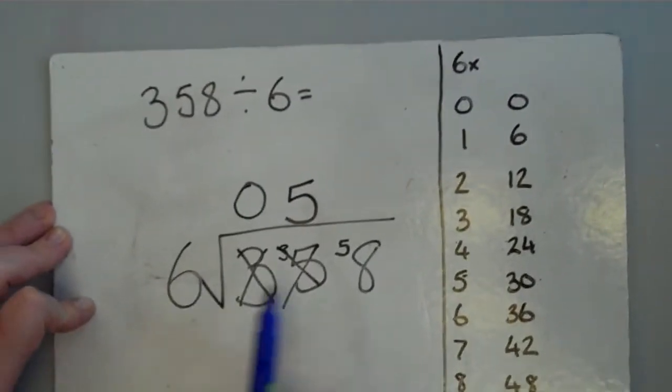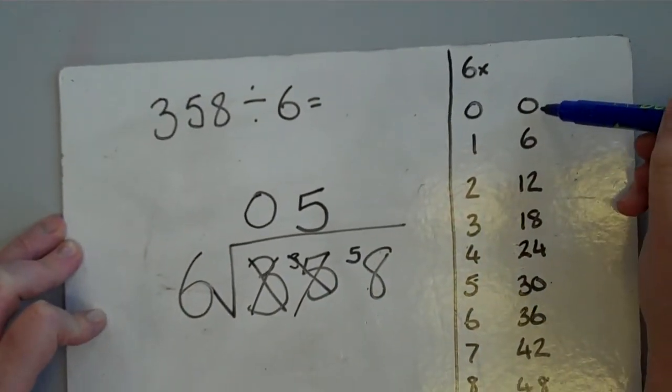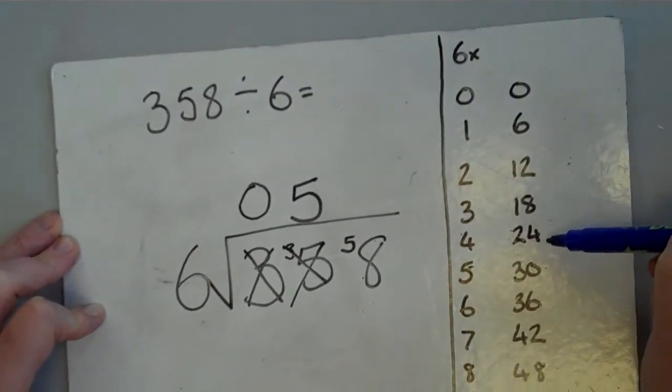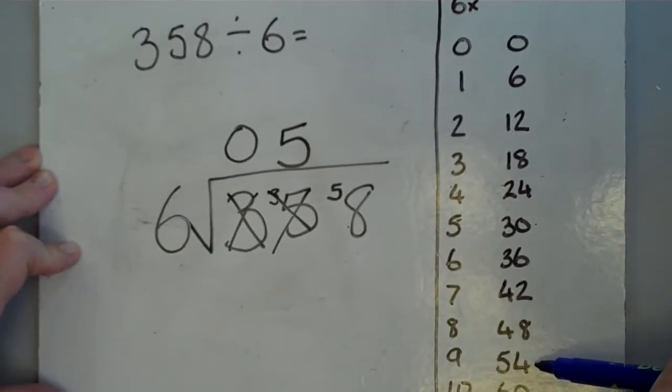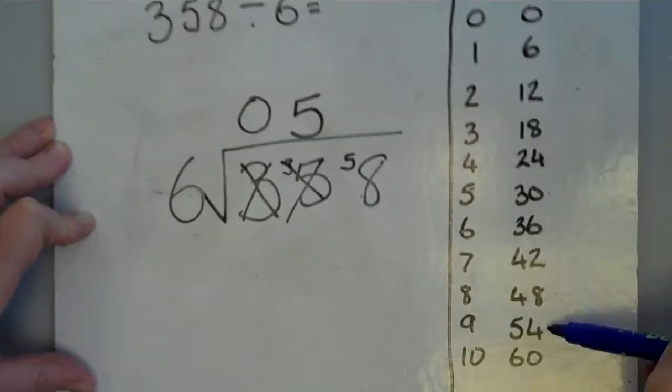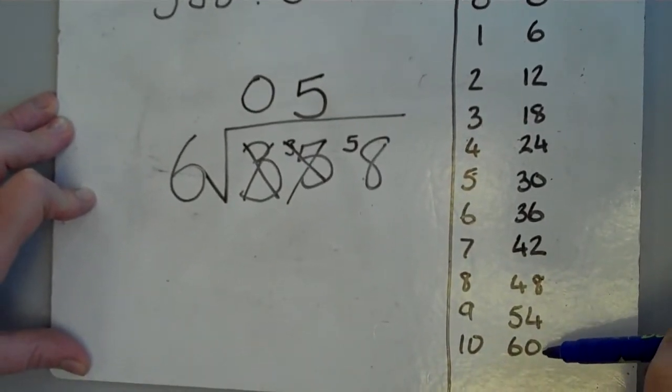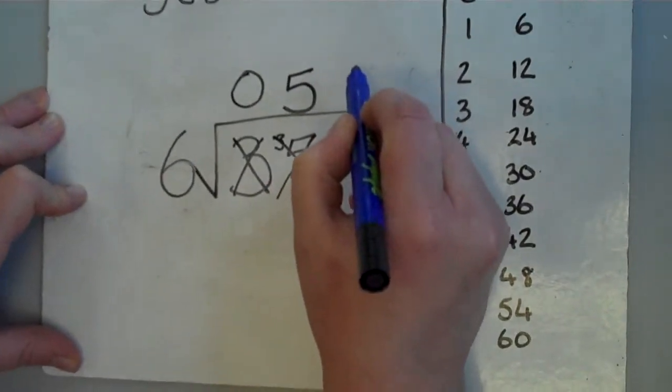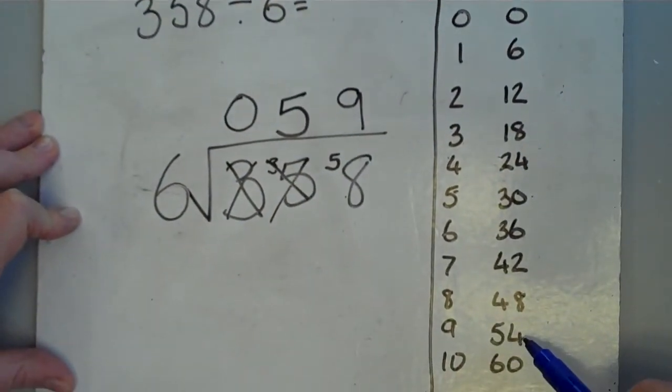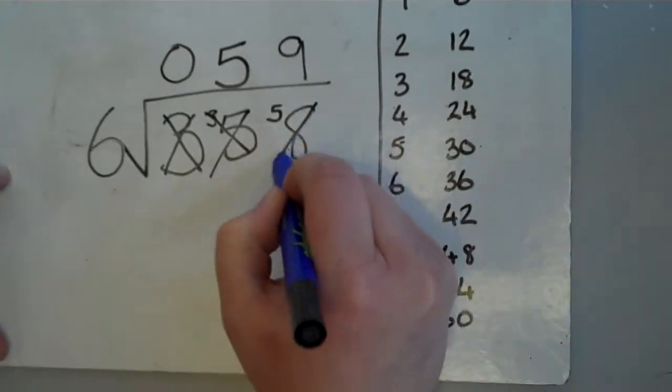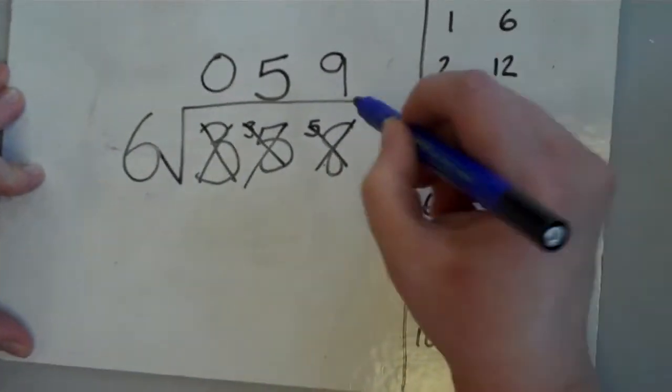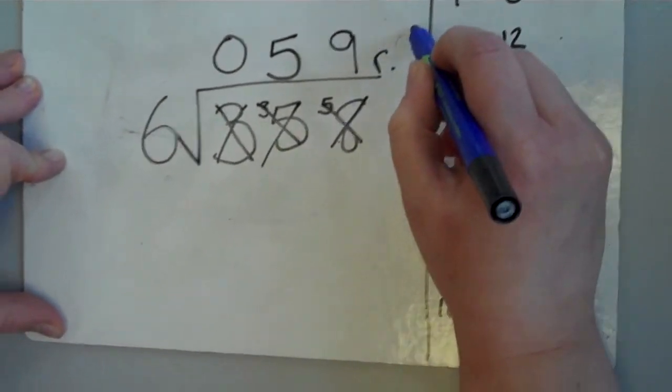How many times now does 6 go into 58? Go down my list, right to the bottom. It goes in 9 times because that would make 54. 60 would be too big, so it goes in 9 times, but because 9 times 6 is 54 and I need 58, I've got 4 left over, 4 remaining. And so remaining, I've got 4.